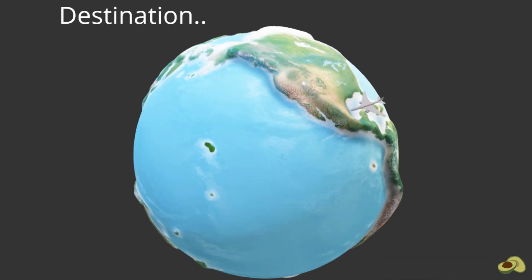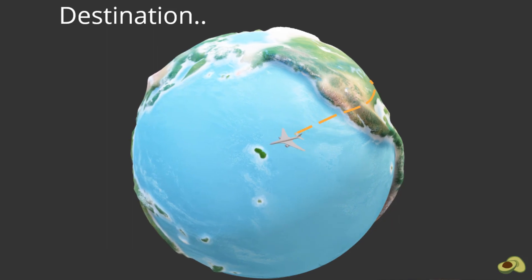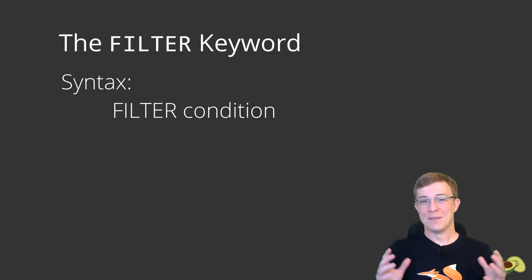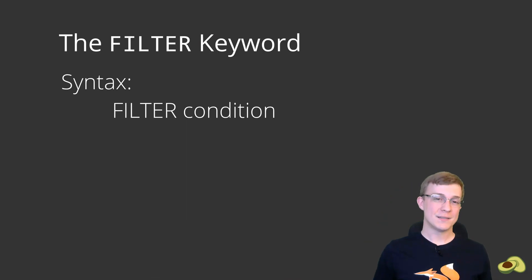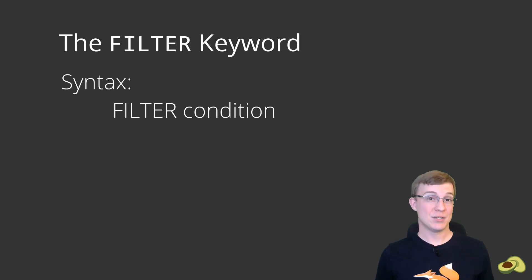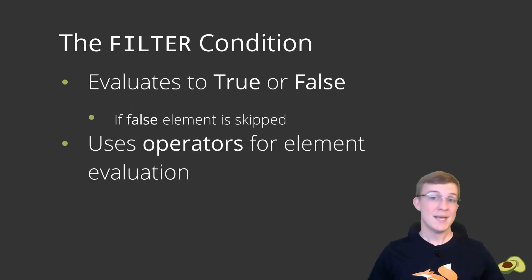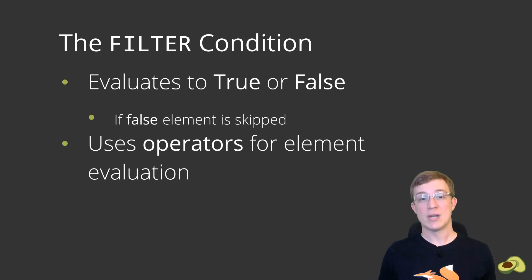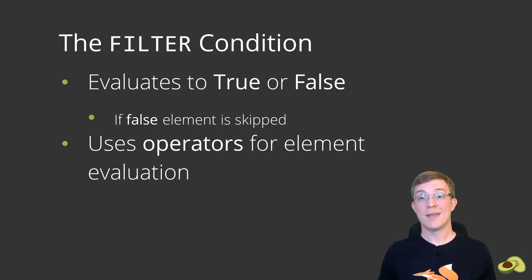Today, we will solve the problem of needing to book a flight for a much-needed vacation to Hawaii. The filter syntax is fairly simple. All that you must do is supply the filter keyword followed by your condition. The condition must evaluate to either true or false. If it is false, the element is skipped and the query moves on to the next element. You may also make use of all AQL operators to evaluate each element. Now, let's use the filter keyword to help locate the flight to Hawaii.